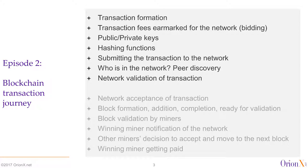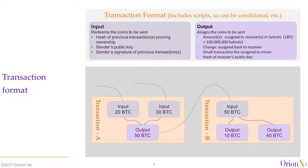A Bitcoin transaction, as a piece of text, includes data fields and scripts. Those scripts give you programming capabilities — you can add conditions and make transactions more complicated. There is an input section and an output section. The input redeems the coins to be sent by referencing previous transactions, including the hash of a previous transaction, the sender's public key, and the sender's signature, proving ownership and authorization.